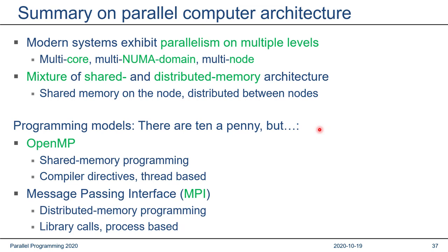A little summary on parallel computer architecture: modern systems have abundant parallelism on multiple levels — multi-core, multi-NUMA domain, and multi-node. Modern clusters are a mixture of shared and distributed memory architectures: shared memory on the node enabling threading parallelism, and distributed memory between nodes. Programming models are numerous, but we deal here with OpenMP for shared memory — based on threads and compiler directives — and MPI for distributed memory — based on a library and processes communicating via messages. That's it for today.